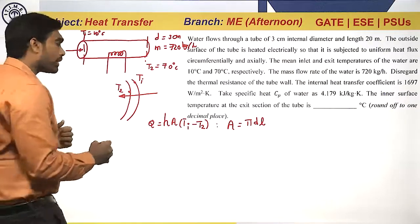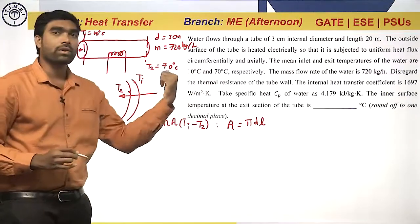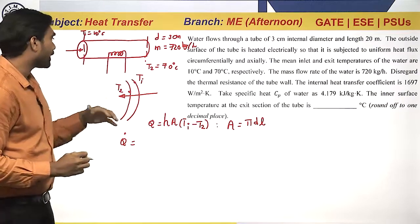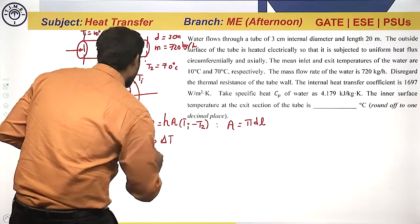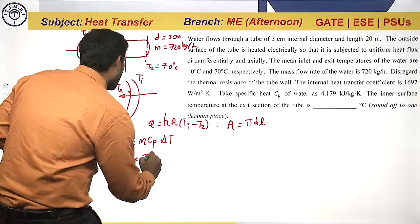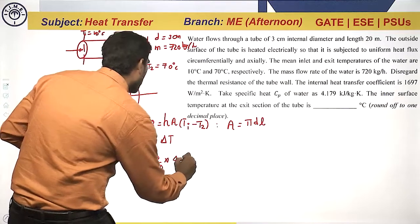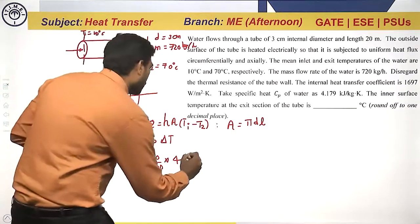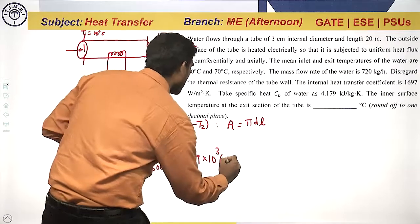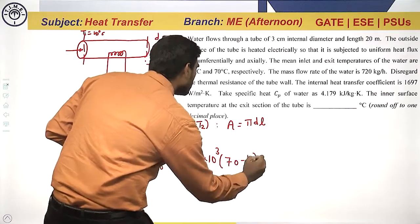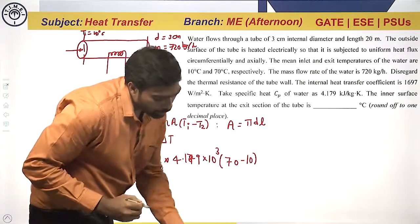Now, to find the rate of heat transfer, since mass flow rate and specific heat of water are given, we use Q equals m·Cp·ΔT. Mass flow rate is 720 kg per hour, so 720 divided by 3600, multiplied by Cp of water 4.179 into 10 cube joule per kg kelvin, into temperature change of 70 minus 10. This gives the rate of heat transfer as 50.148 into 10 cube watts.